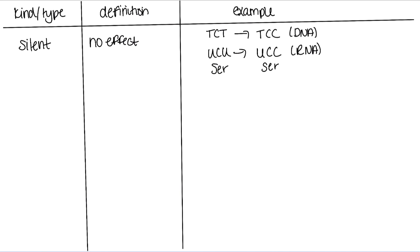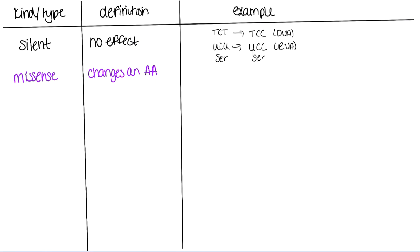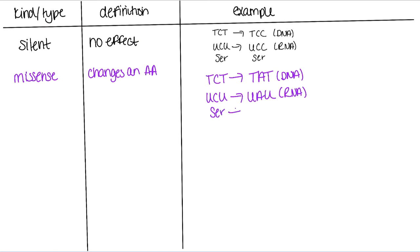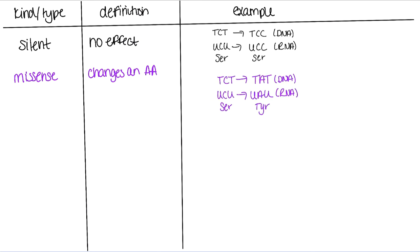The second type of mutation is a missense mutation, and a missense mutation changes an amino acid. Using our same example of starting with TCT — now what if we have TAT instead? We transcribe that to get UCU, and now we have UAU. We started with serine, and now if you look up UAU using our codon table, that changes the amino acid to TYR, or tyrosine. So a missense mutation is going to cause the changing of one amino acid.